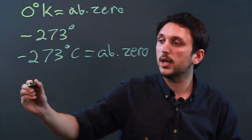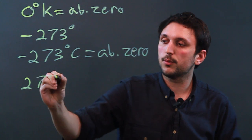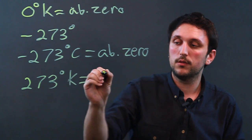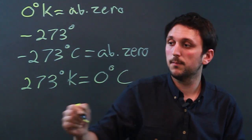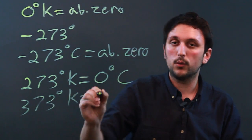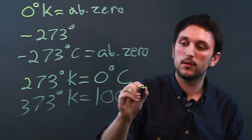For example, 273 degrees Kelvin equals zero degrees Celsius, or 373 degrees Kelvin equals 100 degrees Celsius.